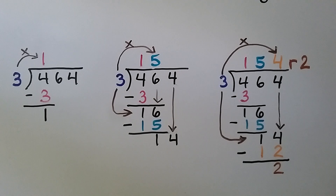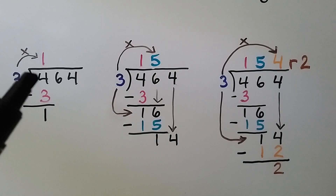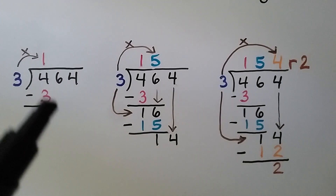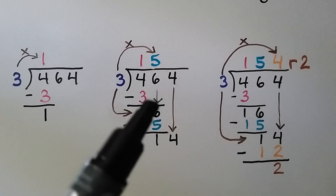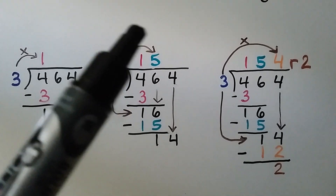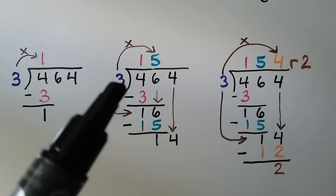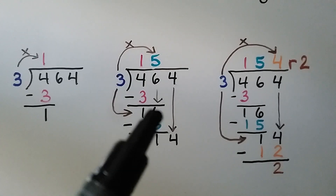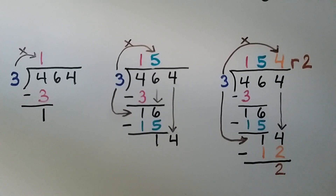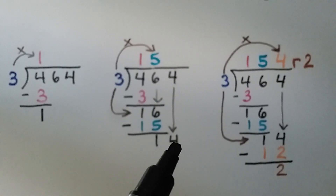Let's try another one. We have four hundred sixty-four divided by three. We ask: can three fit into the first digit four? Yes, this time it can. It fits in one time because three times one is three. We do our multiplication, write our three, subtract and get a one. Now it's the six's turn to come down. We bring down the six and ask: how many times can three fit into sixteen? Three times five is fifteen, so we write a five above the six, because that's the place value we're at.